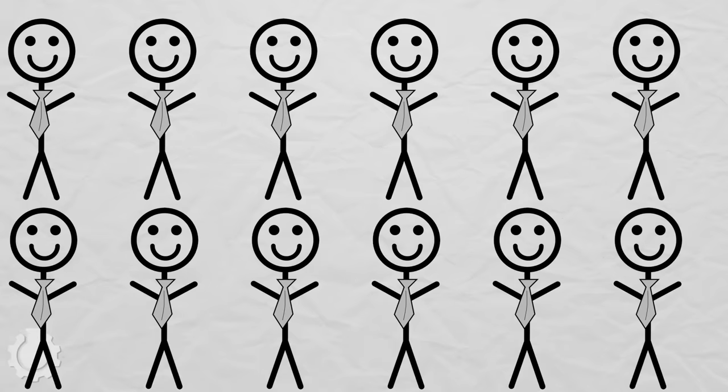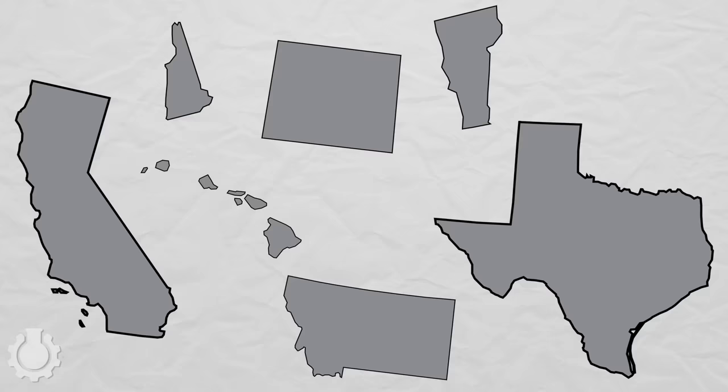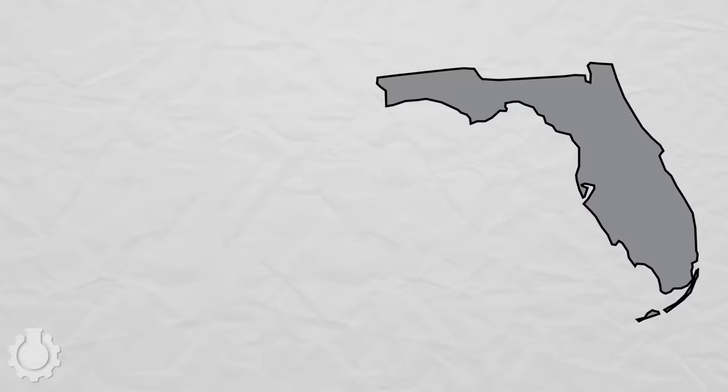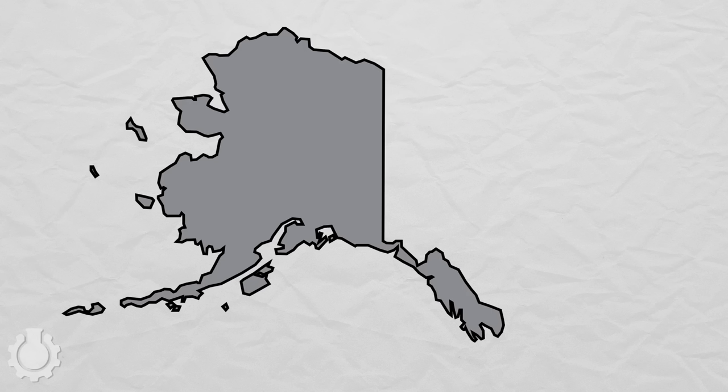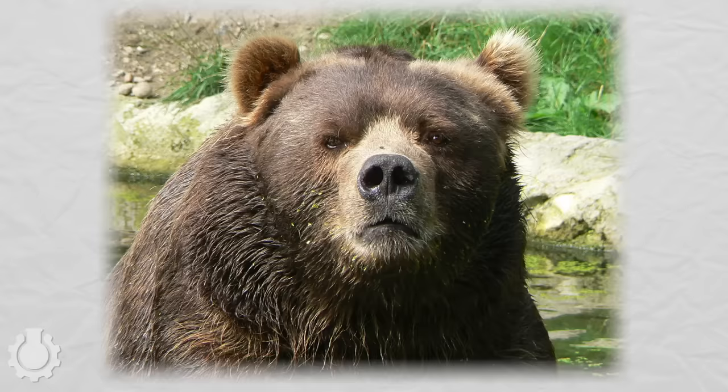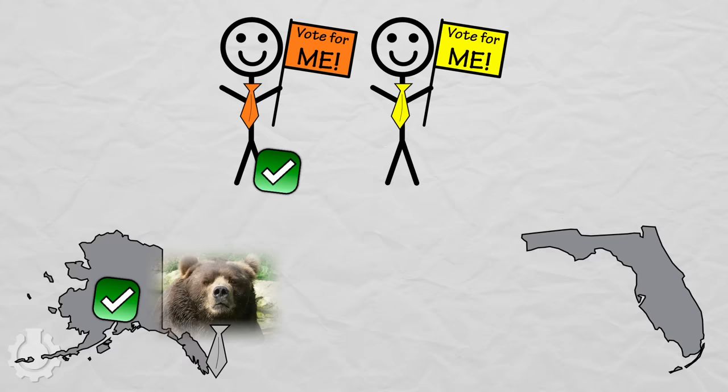Except, there's a catch. Each representative doesn't get one vote — it's each state that gets one vote. So Florida's 27 representatives have to decide amongst themselves who to support before casting Florida's one vote to help break the tie. Meanwhile, thinly populated Alaska's sole representative has only to consult himself before casting Alaska's vote.